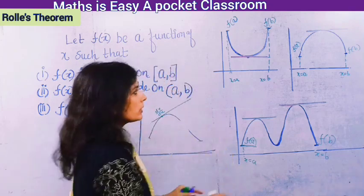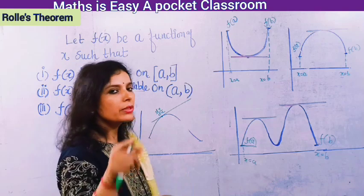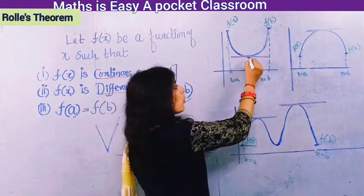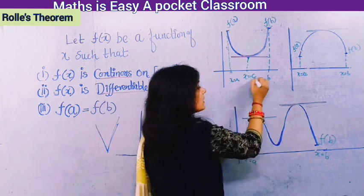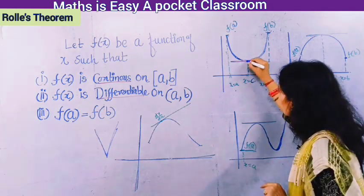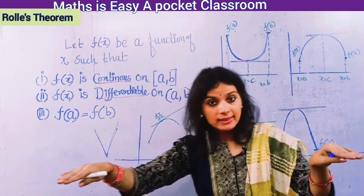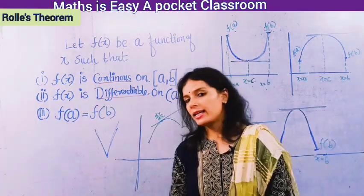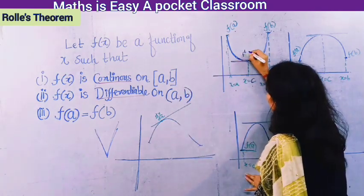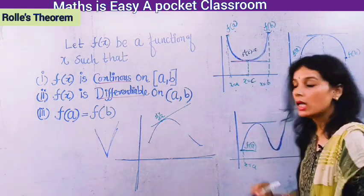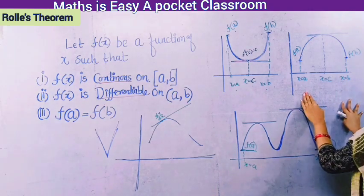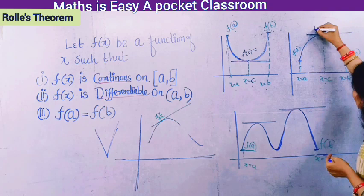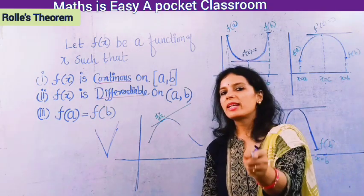What does Rolle's theorem state? Since the function is differentiable, we can draw a tangent at every point. Rolle's theorem says there exists at least one point c between a and b at which the tangent is parallel to the x-axis. Tangent parallel to the x-axis means f'(c) = 0.